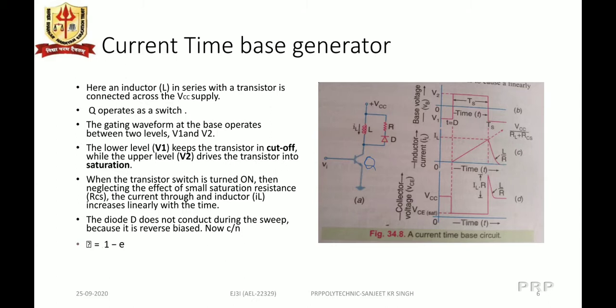The diode D does not conduct during the sweep time because it is reverse biased. The current growth through the inductor IL is given as VCC / (RL + RCS) × (1 − e^(−(RL + RCS)/L × t)), where RL is the coil resistance. If the sweep time TS is less than the time constant L / (RL + RCS), the expression simplifies to I = (VCC / L) × t.